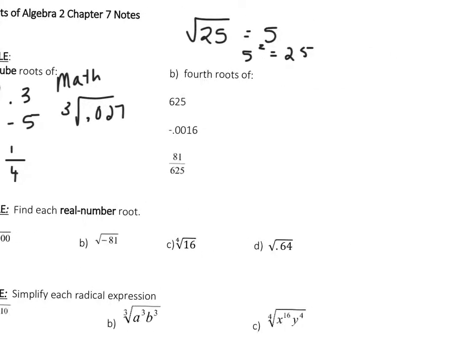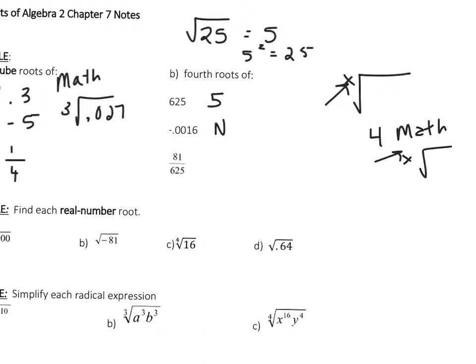So for fourth roots, I'm going to go to math and select the x-root symbol. Depending on your calculator, you can insert a 4 into that spot. So the fourth root of 625 is 5. If you have an older calculator, you press 4 first, then go to math and select that symbol, and it will put 4 in that spot. If I do the fourth root of negative 0.0016, I get an error, because a negative times a negative times a negative times a negative is going to be a positive number, so you can't take the fourth root of a negative number.